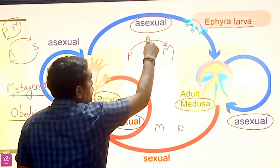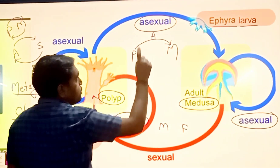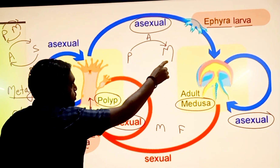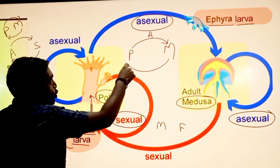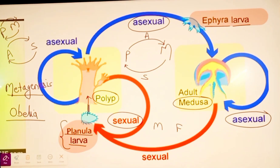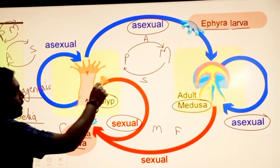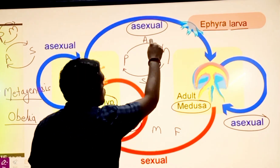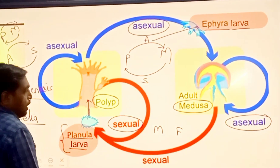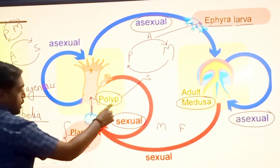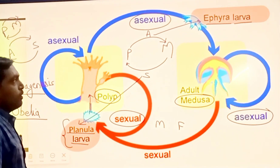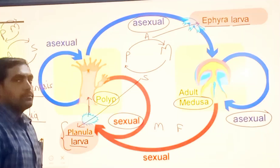To summarize: polyp undergoes asexual reproduction to form medusa, and medusa undergoes sexual reproduction forming polyp again — PAM MSP. In asexual reproduction the larvae involved is ephyra larvae, and in sexual reproduction it is planula larvae. Thank you very much.